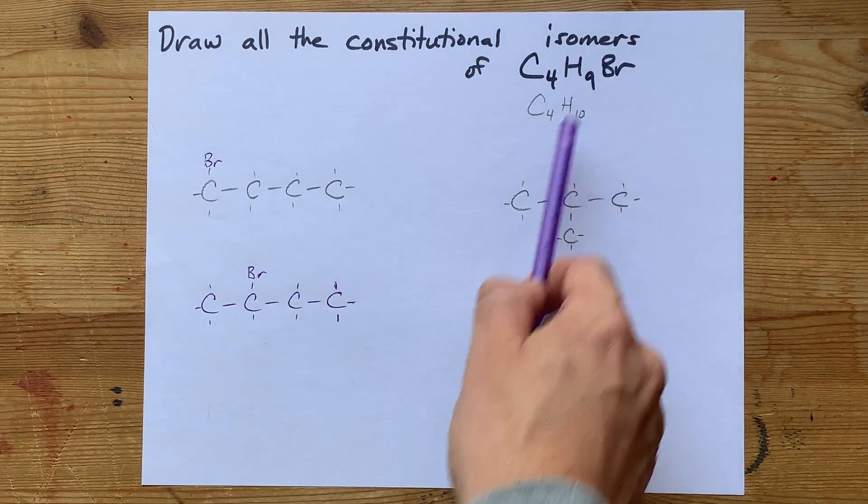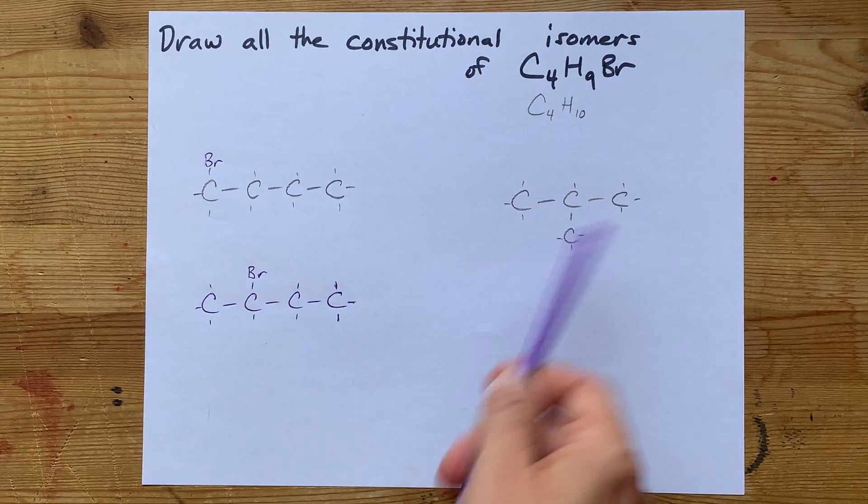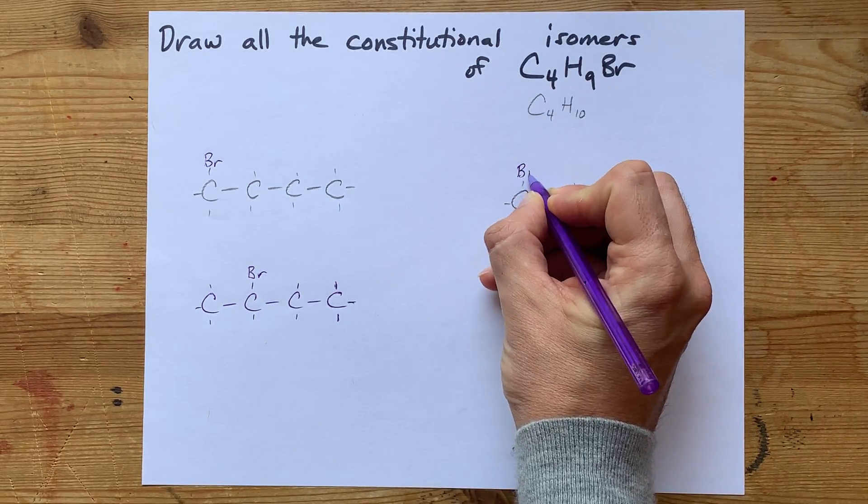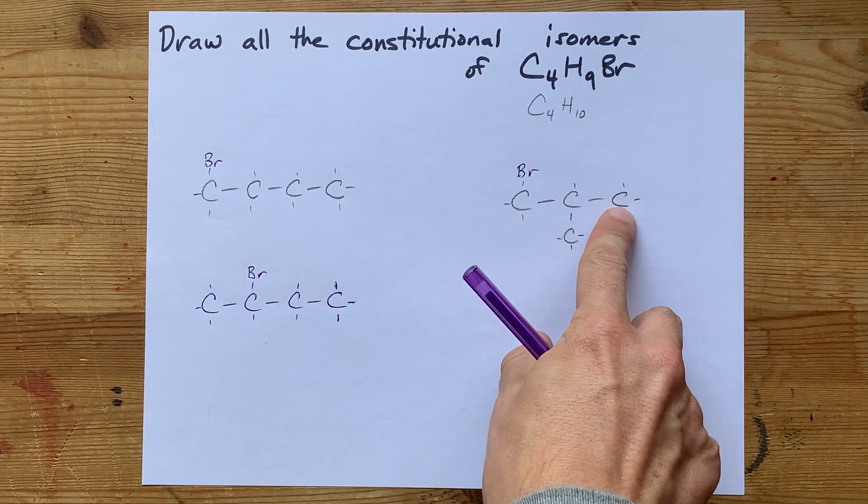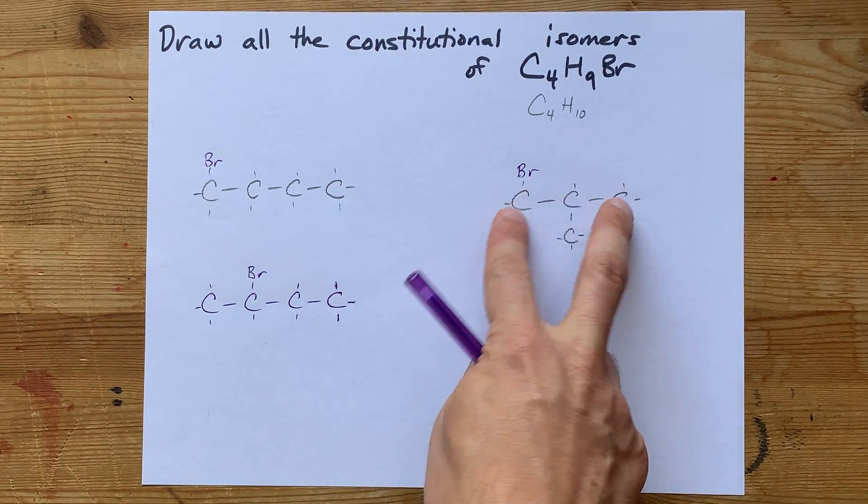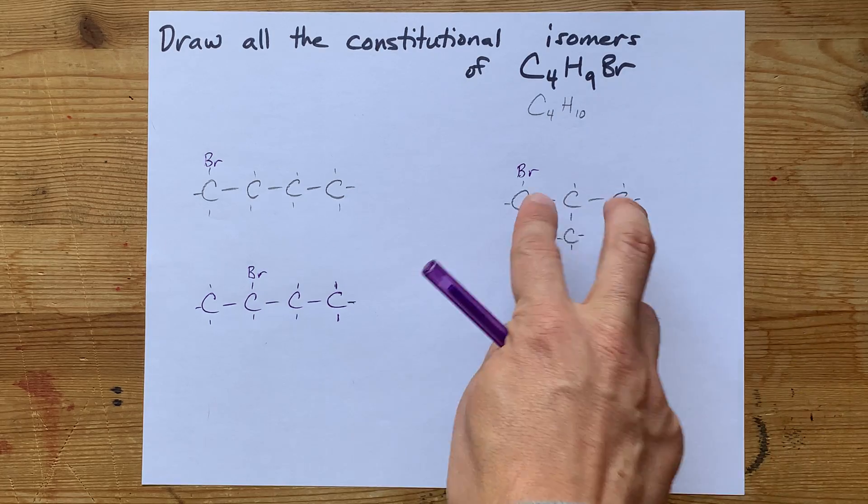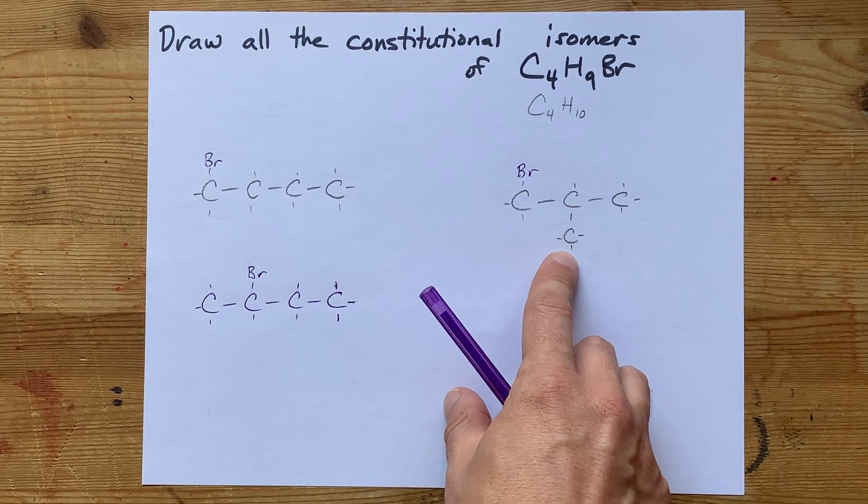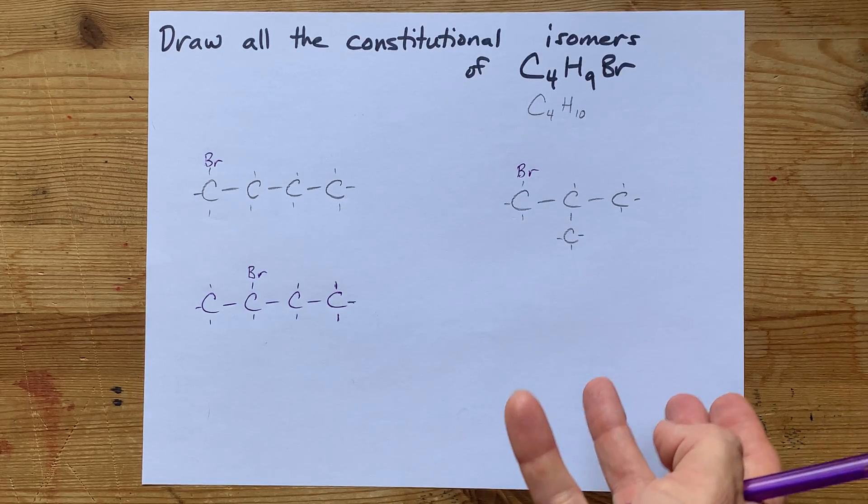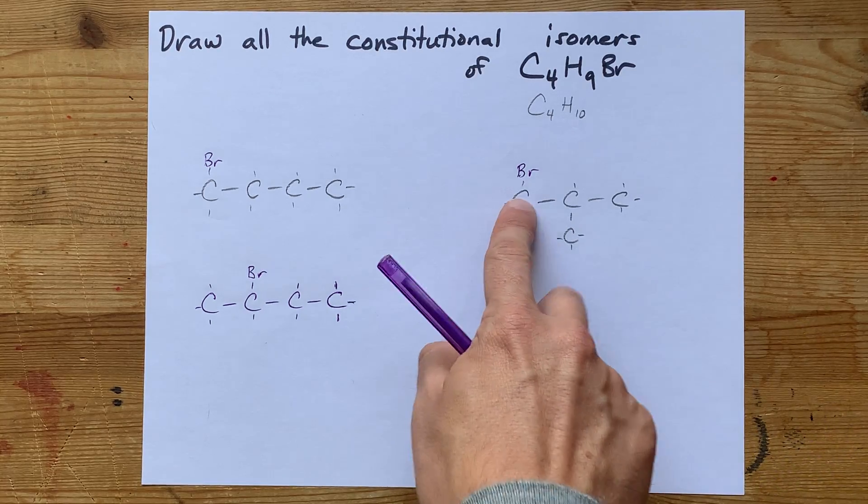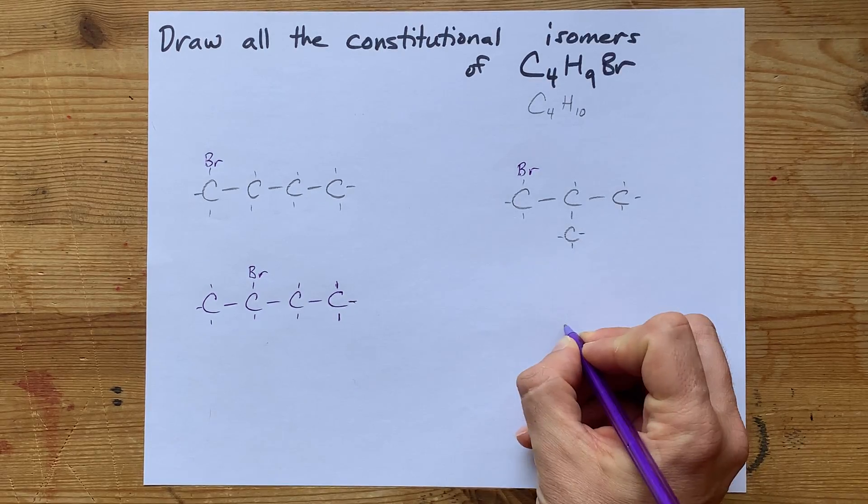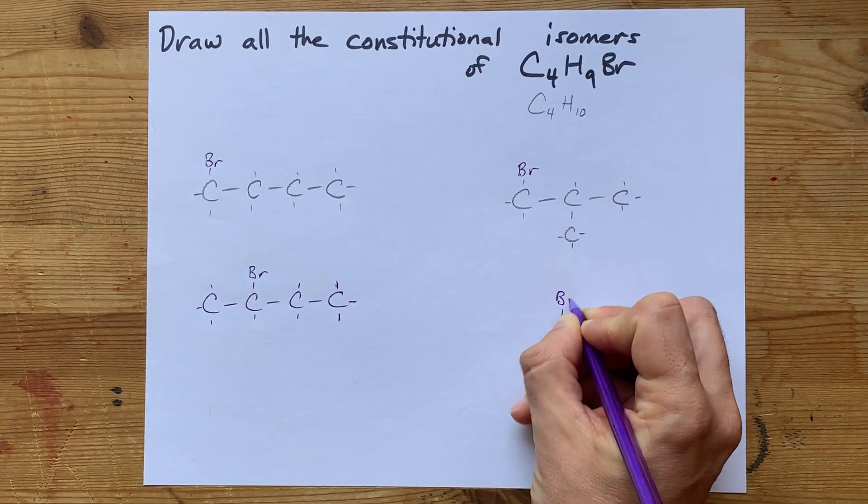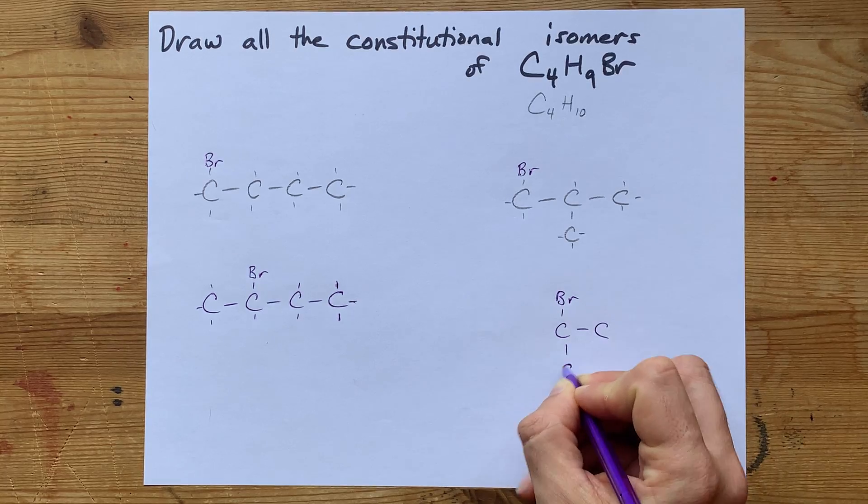Where can I put a bromine on methylpropane? Well, I could put it on the first carbon here. If I put a bromine on that carbon instead, that's actually just the same molecule again. It's just flipped. And if I put it on this carbon, it actually ends up being the exact same as well because they're just all outer carbons from that central one. But I do think it's different to put the bromine here on the central carbon.